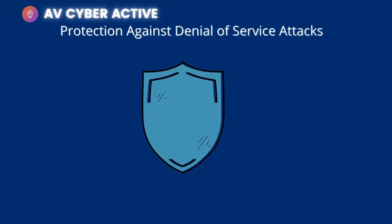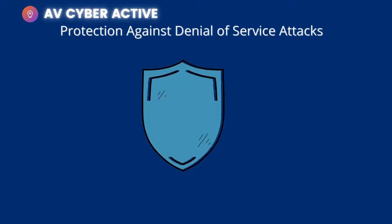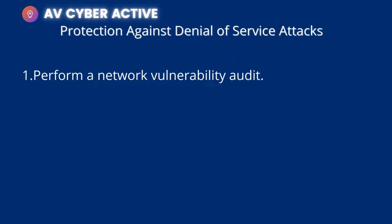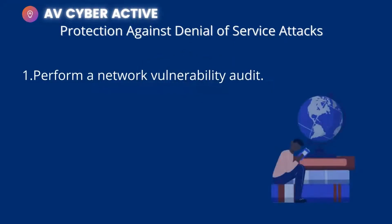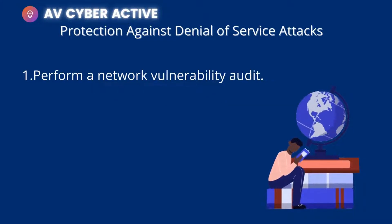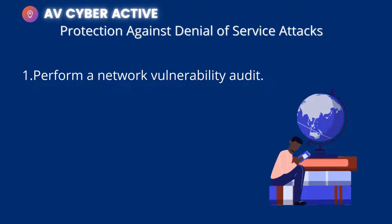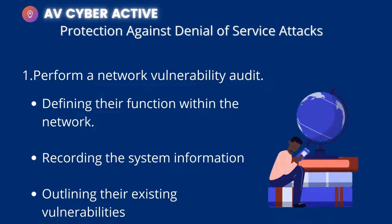Now that we know the types of DDoS attacks, how can you prevent them? First, perform a network vulnerability audit. To properly defend your network, you have to understand its own weaknesses. Always do a complete review of all devices on your network. This process includes defining their function within the network, recording the system information, and outlining existing vulnerabilities. This level of visibility will allow you to understand your network's deficiencies, prioritize them by urgency, and patch any holes to keep them from being exploited.